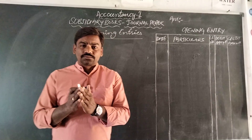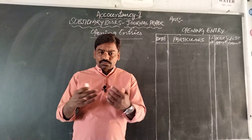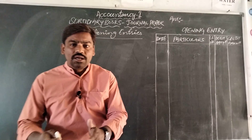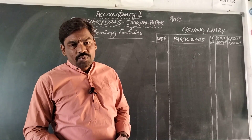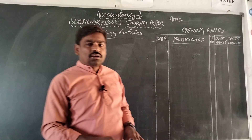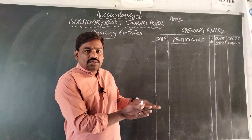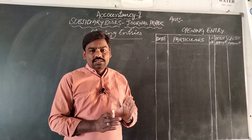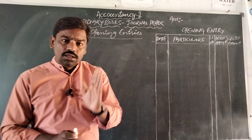Also, asset and liability balances from the previous year's balance sheet are transferred to the current year's accounts. For such transfers, we need to write some entries — those entries are called opening entries and are written in the journal proper. Whatever balances are taken from the previous year's balance sheet: asset balances are shown as debit balances and liability balances are shown as credit balances in the opening entry.